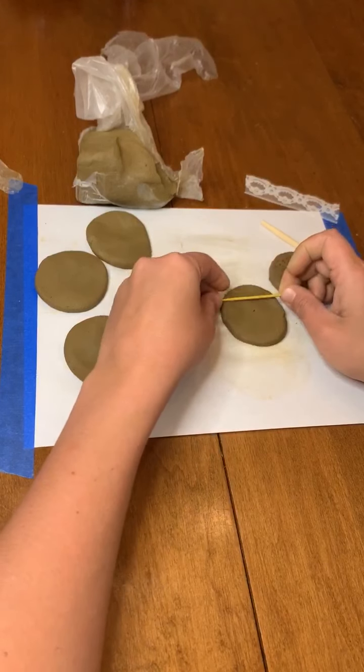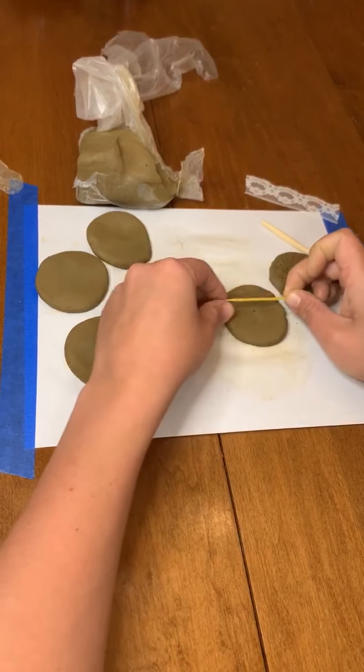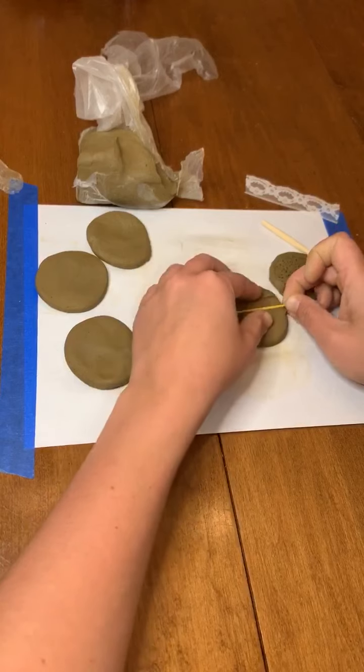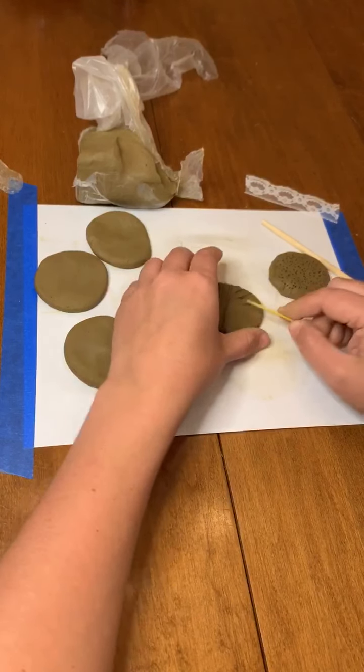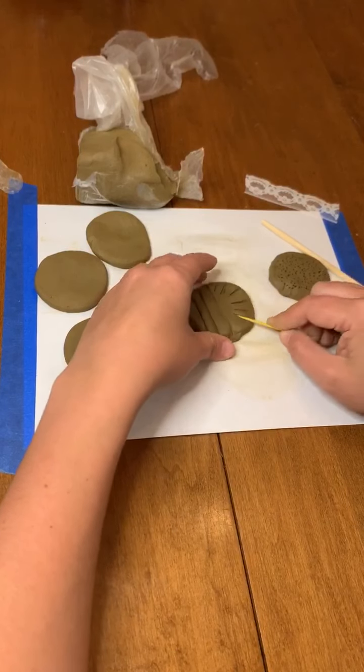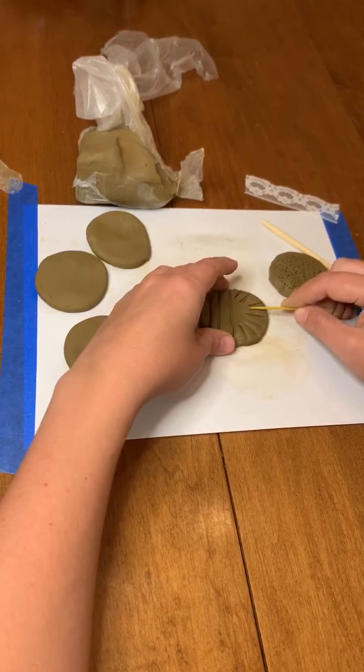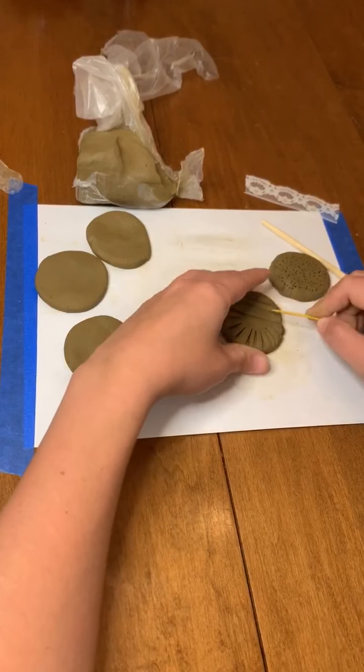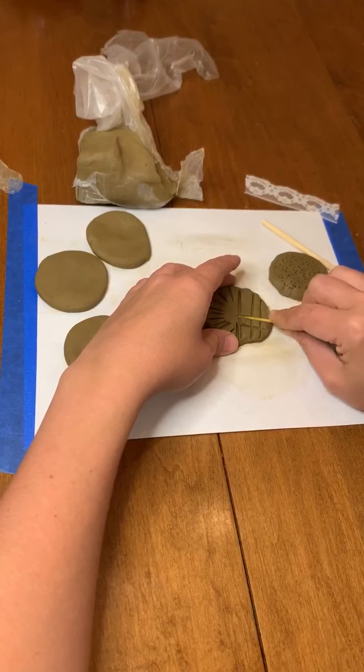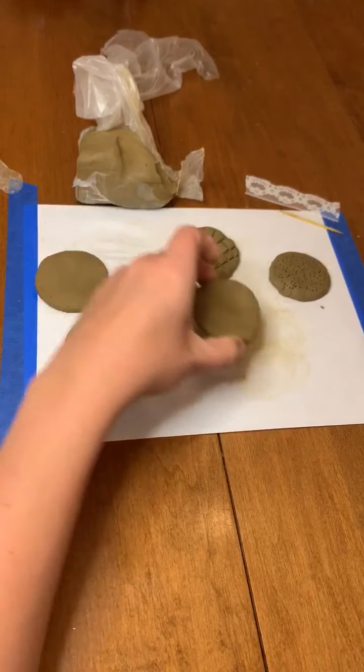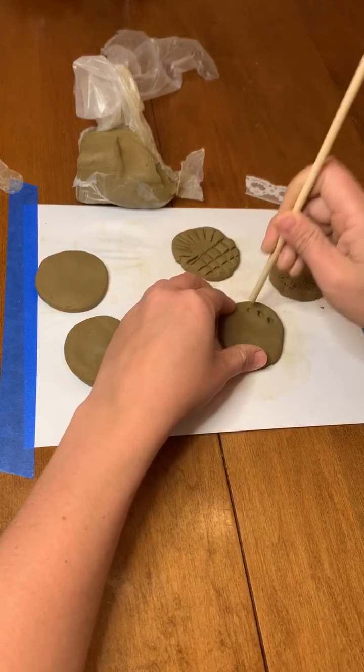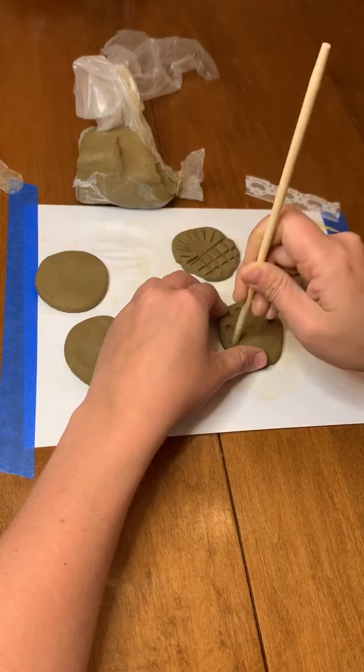So think about the different ways you can hold the tools to do different things. Think this becomes a texture. And then I can even crisscross. So start to think about different things you can do with the tools or with other things you have.